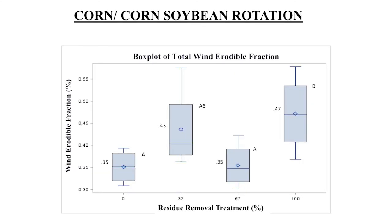We also found that the wind erodible fraction was higher in the 100 percent removal — about 47 percent of the aggregates were in the wind erodible size for the 100 percent removal, and only about 35 percent in the zero percent removal.